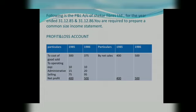From the Profit and Loss Account: Cost of Goods Sold is 300 (1985) and 375 (1986). Operating Expenses — Administrative: 10 (1985) and 10 (1986); Selling: 15 (1985) and 20 (1986). Net Profit: 75 (1985) and 95 (1986). Net Sales: 400 (1985) and 500 (1986).